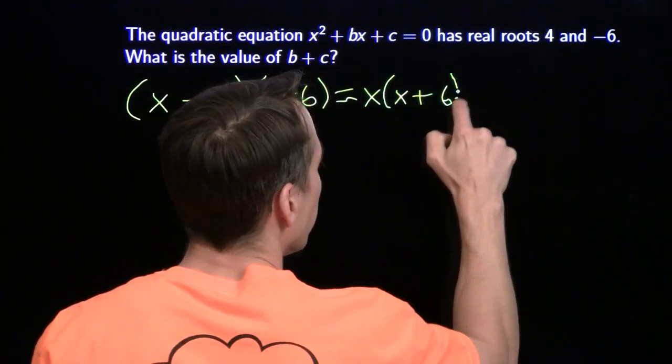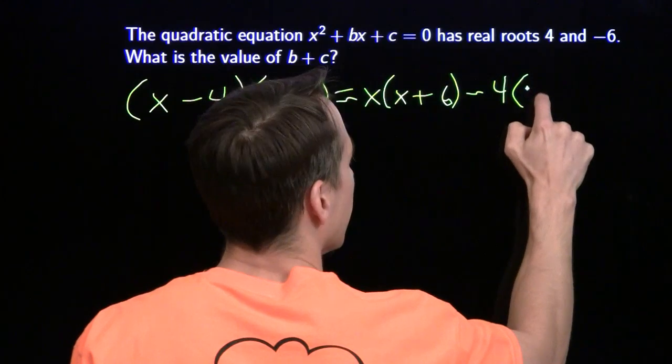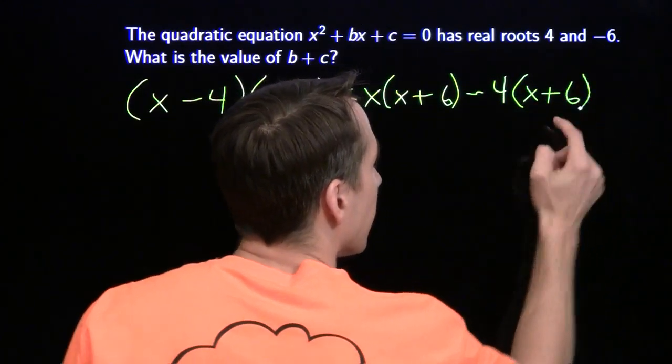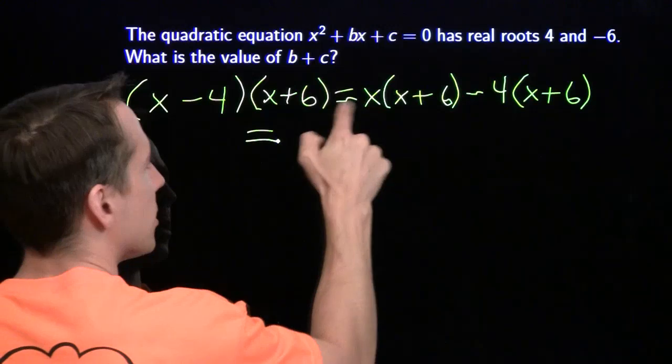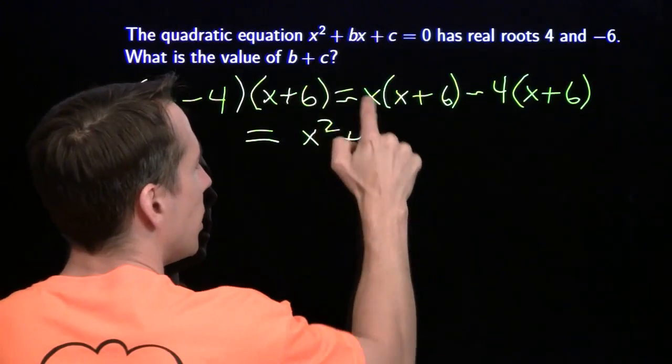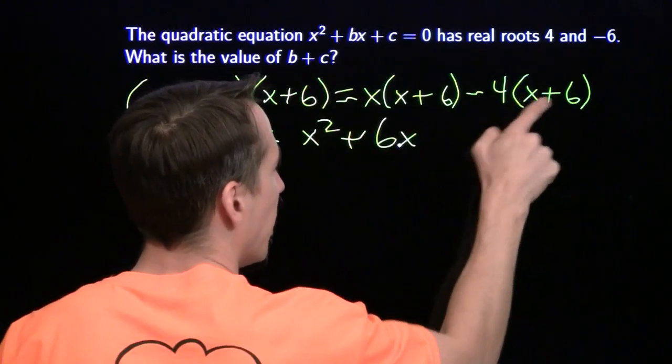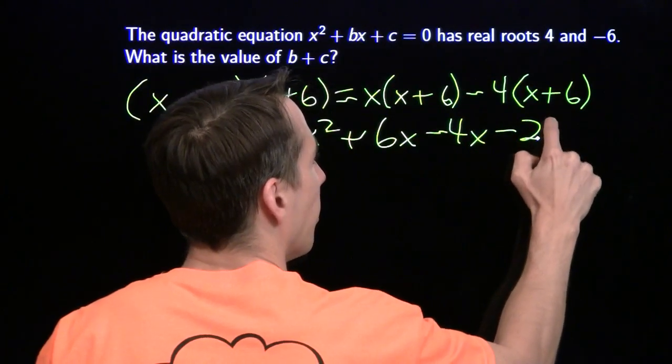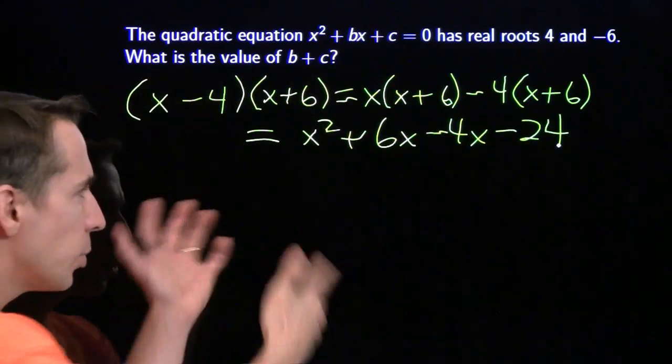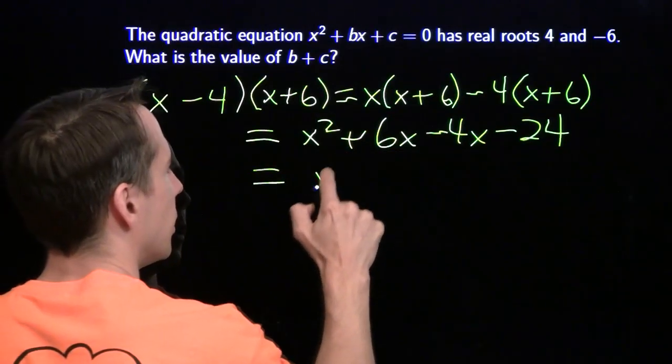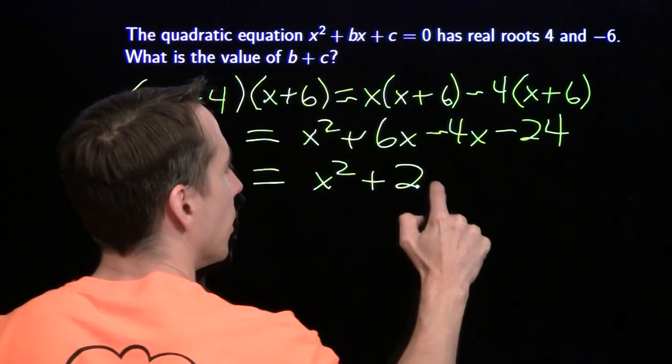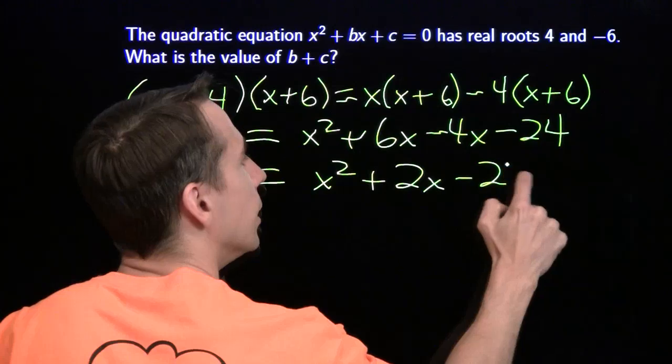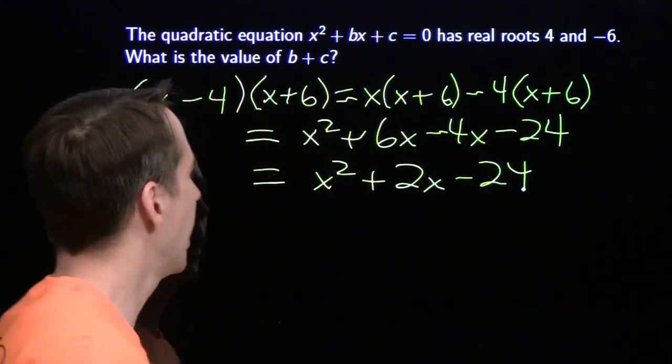I know you do this a little bit faster than I do, but I like to go ahead and think about the distributive property here and make sure I don't make any mistakes. We get x squared, 6x minus 4x minus 24, and then we just group the like terms in the middle. You probably went straight from here to here, and that's okay.